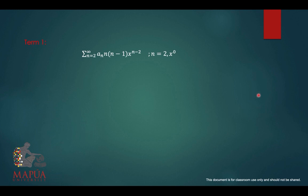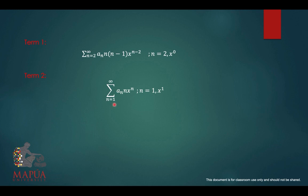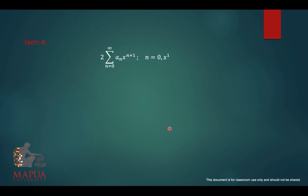Checking the power of x at the initial index for each term: for the first term starting at n equals 2, substituting gives x raised to 0 (since 2 minus 2 equals 0). For the third term at n equals 1, that gives x raised to 0. For term 4 at n equals 0, that gives x raised to 1. For term 5, that gives x raised to 0.